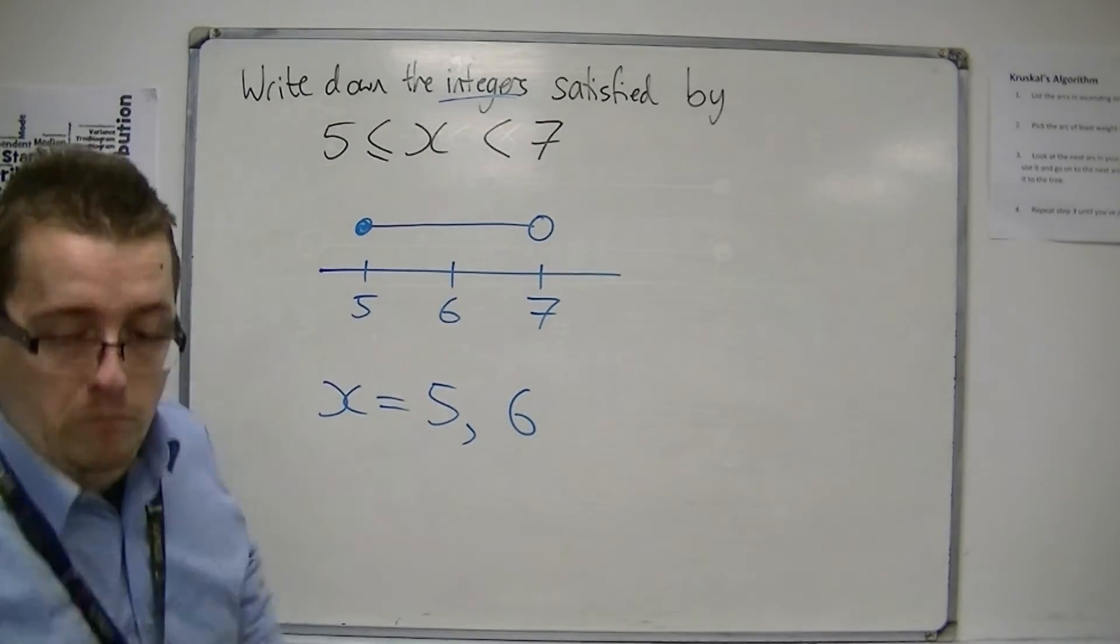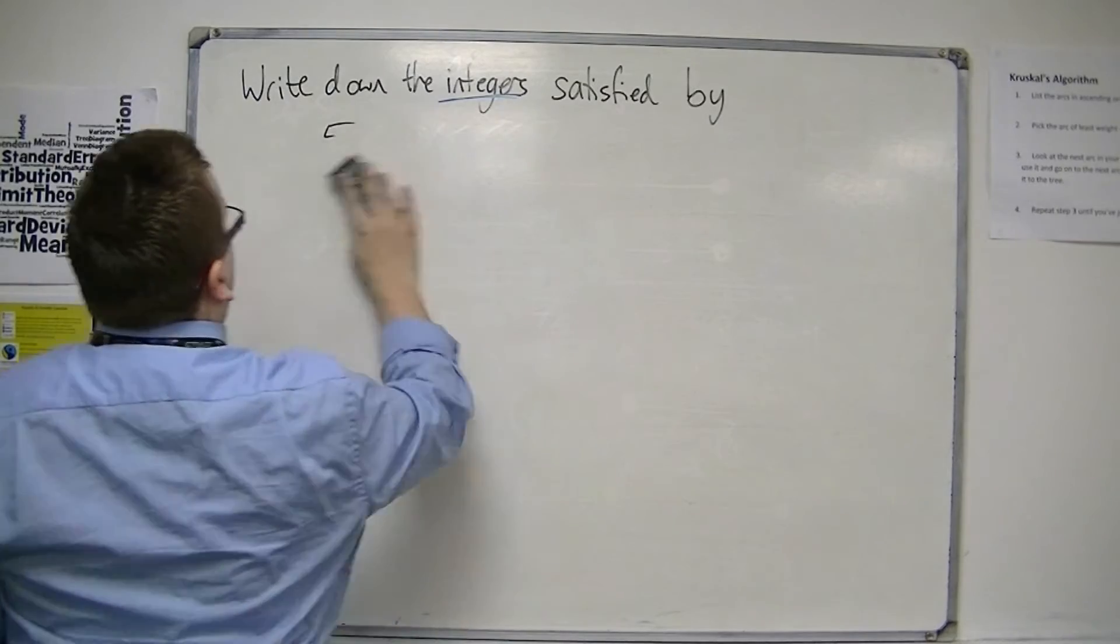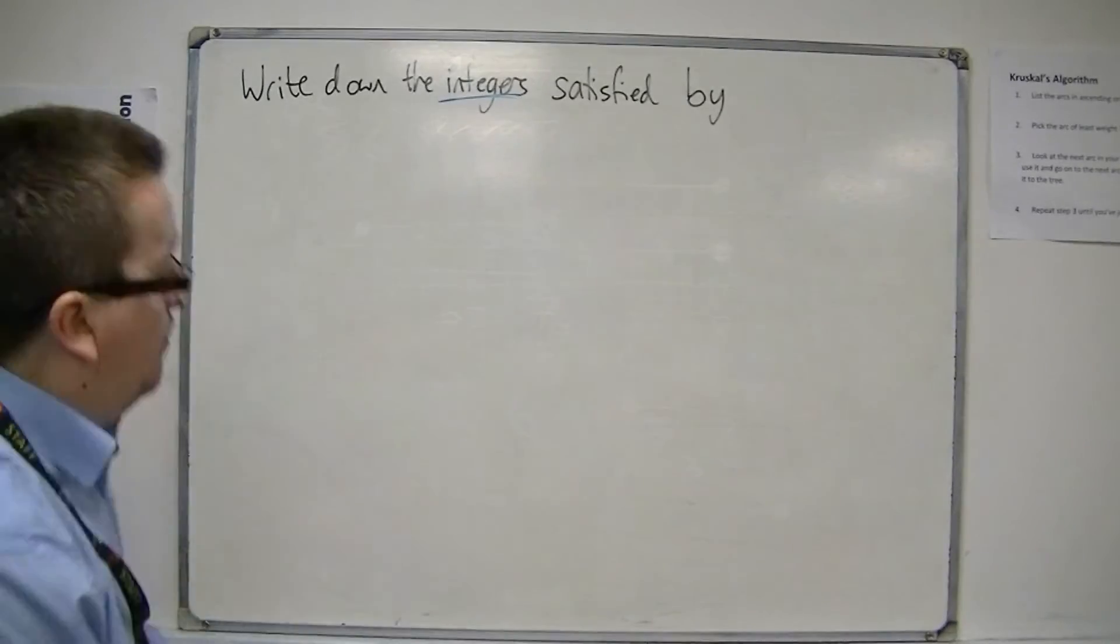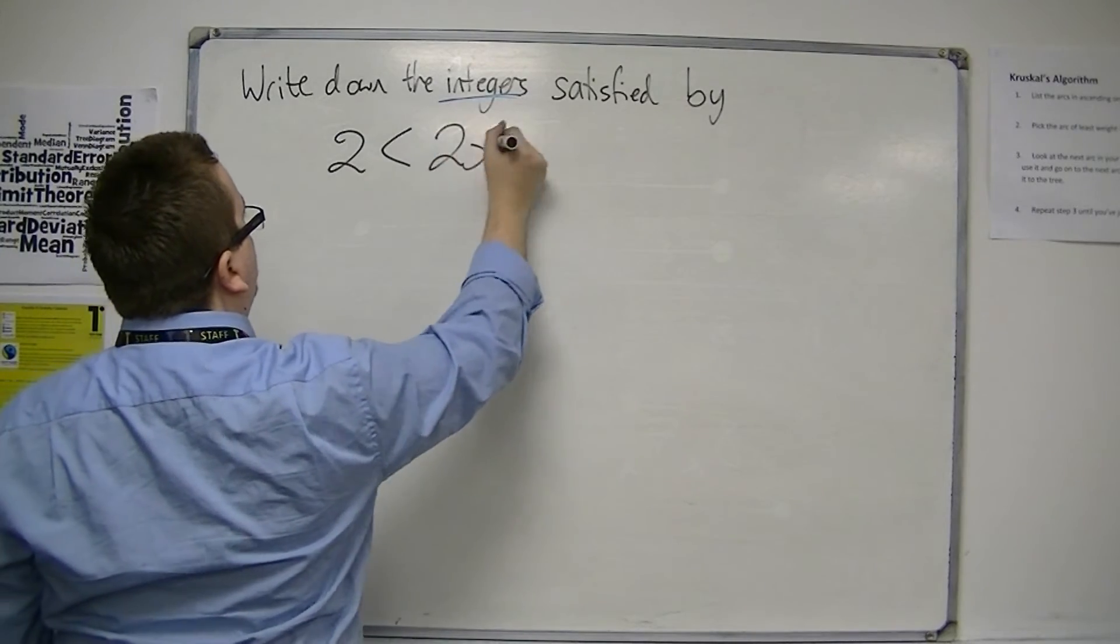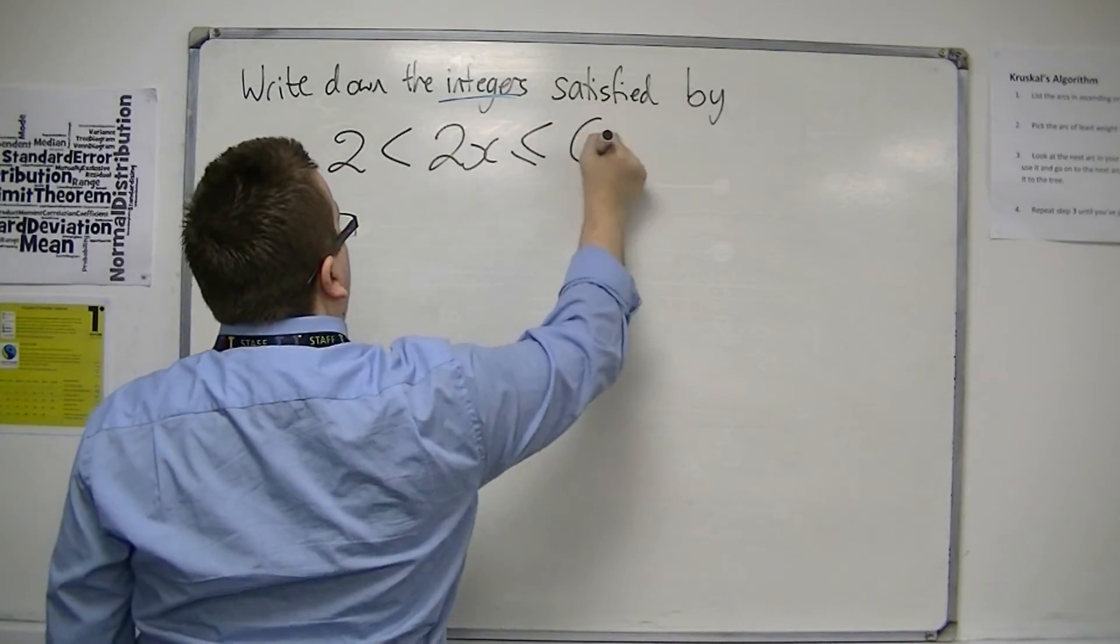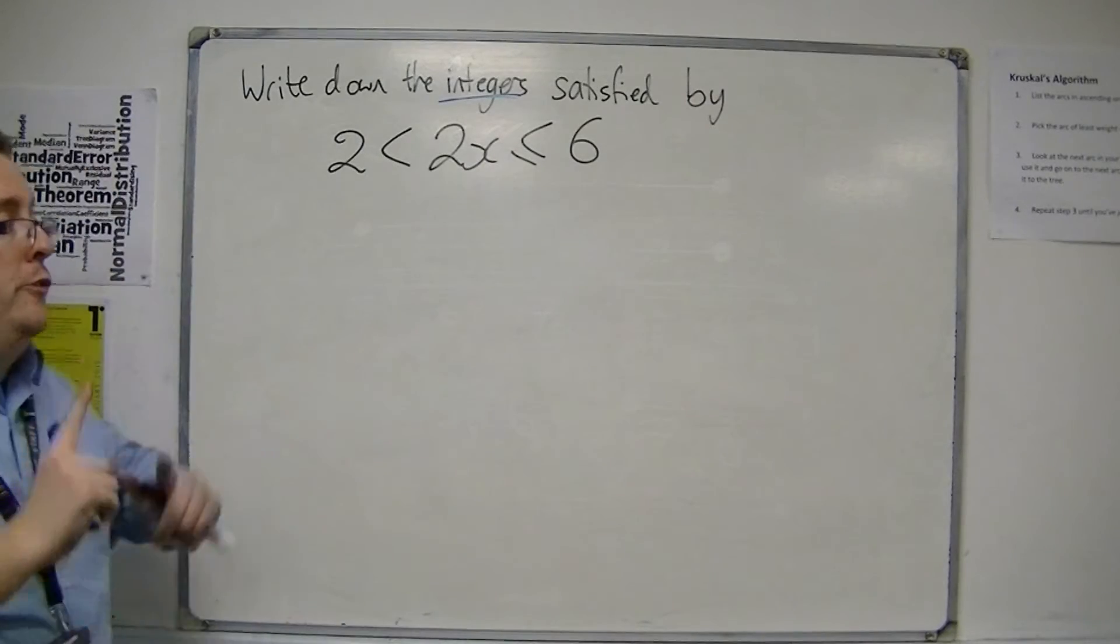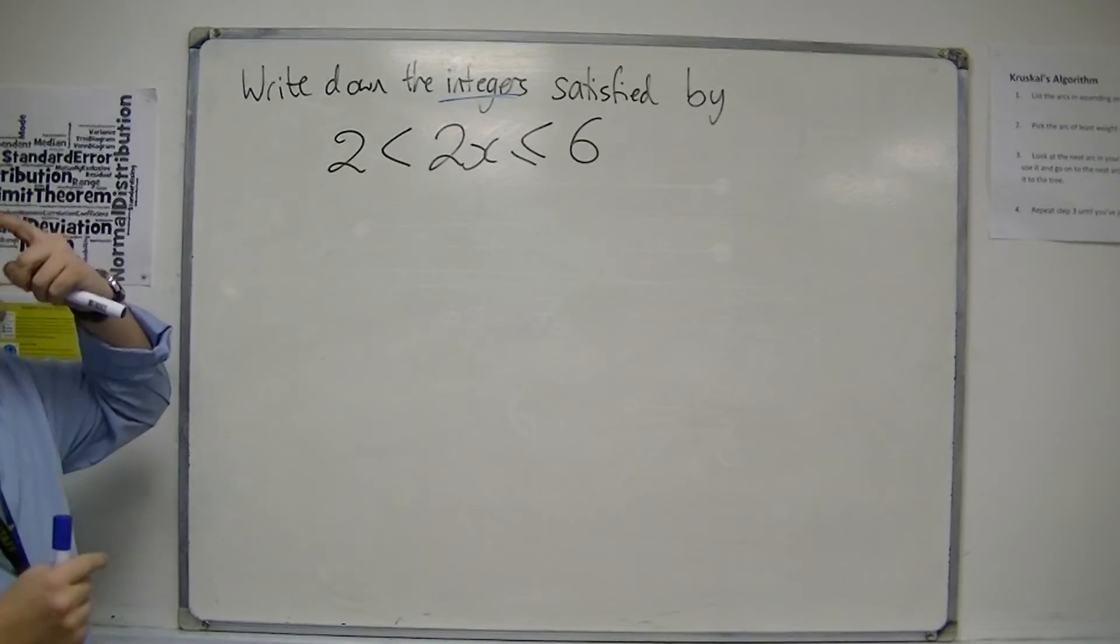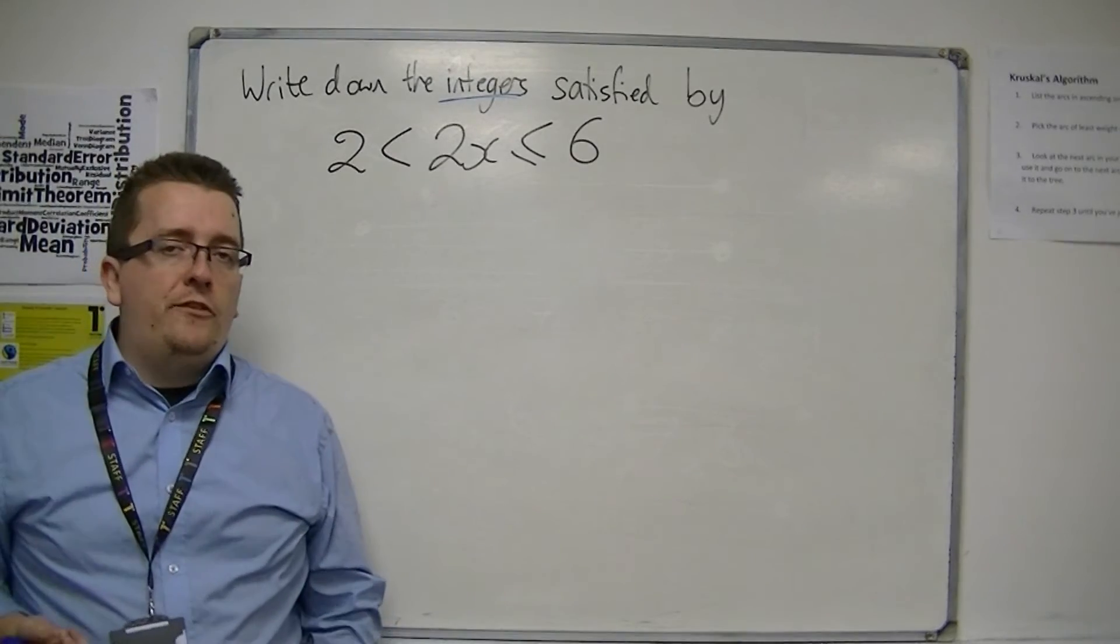One more example. It may well be that the question looks something like this. Now this looks more difficult. Write down the integers satisfied by that, while this 2x is making it difficult.